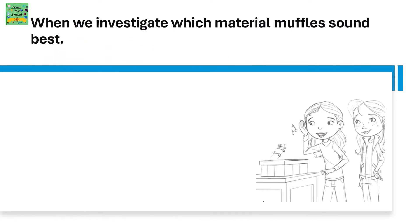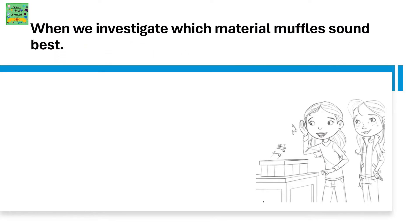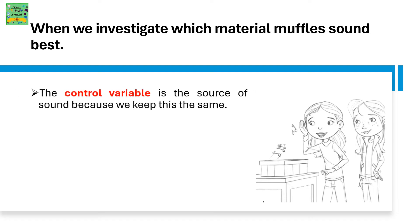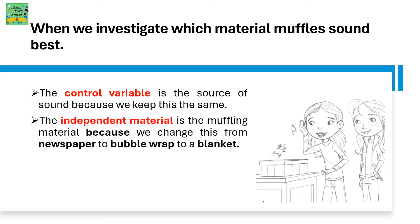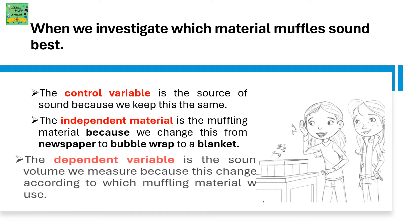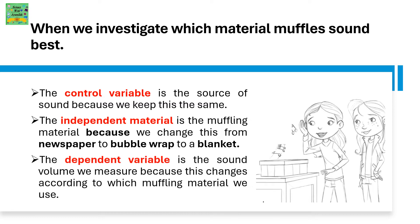When we investigate which material muffles sound best, the control variable is the source of sound, because we keep this the same. The independent variable is the muffling material, because we change this from newspaper to bubble wrap to a blanket. The dependent variable is the sound volume we measure, because this changes according to which muffling material we use.